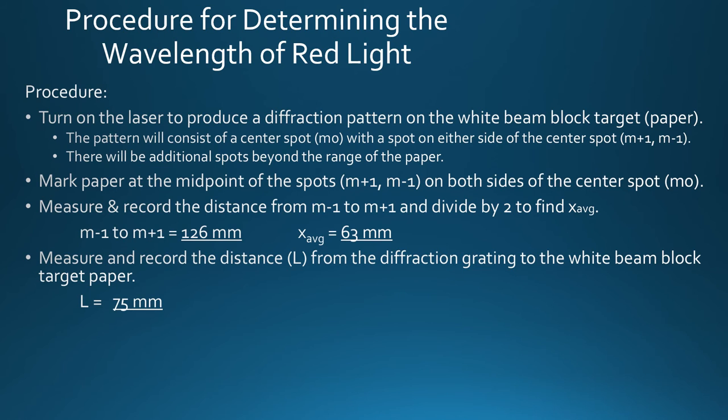Remember when we read the procedure before and talked about what we needed to do? We needed to turn on the laser to produce a diffraction pattern on the block. We did that. We needed to mark the midpoint of the two spots on both sides of the center spot, and we did that. And then we measured and recorded distances. We found that the one distance was 126 millimeters to find out that our x average would be 63 millimeters. We also measured L because all of these quantities are in our equation, L to be 75 millimeters.